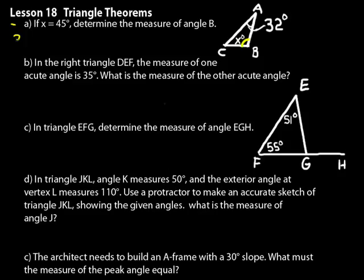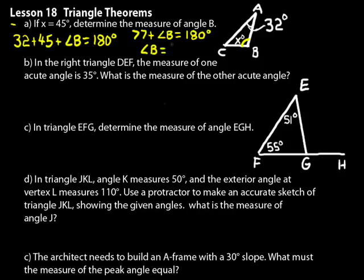Well, we would just say 32 plus 45 plus angle B is equal to 180 degrees. So 77 plus angle B is equal to 180 degrees. And then angle B, therefore, must equal 103 degrees. So typical math problem, if you know the rule, then solving the problem is easy. So if we didn't remember that the sum of the angles in a triangle equals 180 degrees, we wouldn't know how to solve this problem.